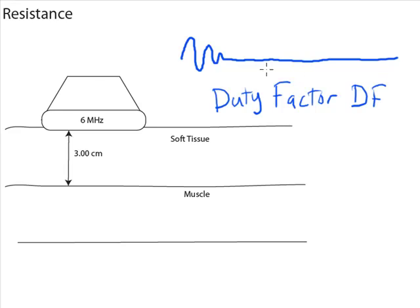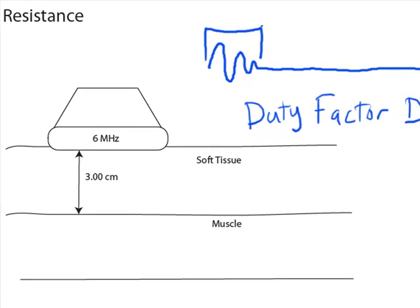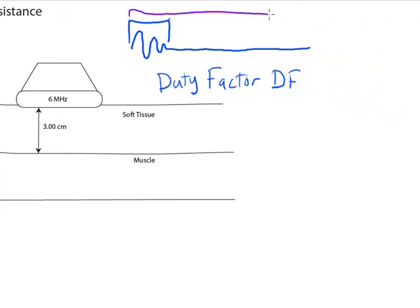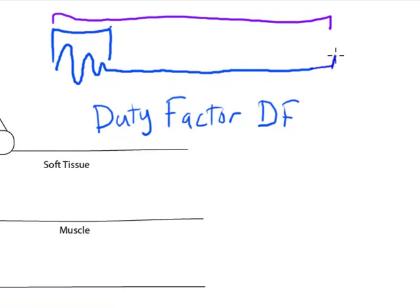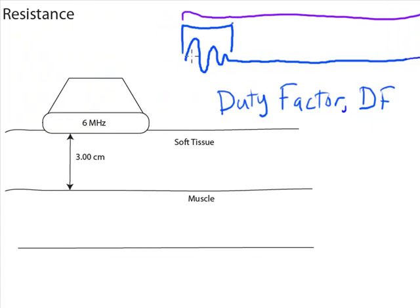The idea behind Duty Factor is looking at the amount of time that the pulse is generated compared to the total amount of time between pulses, from the start of one pulse to the start of another pulse. This can either be expressed as a fraction, the fraction of time that the ultrasonic transducer is on, or it can be calculated as a percentage, the percentage of time that it's on compared to the total time.